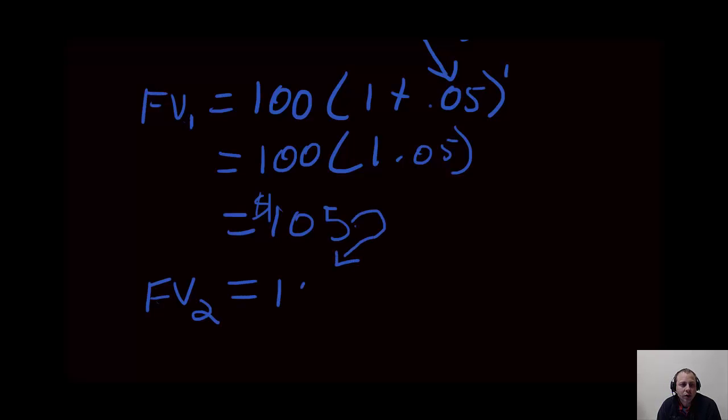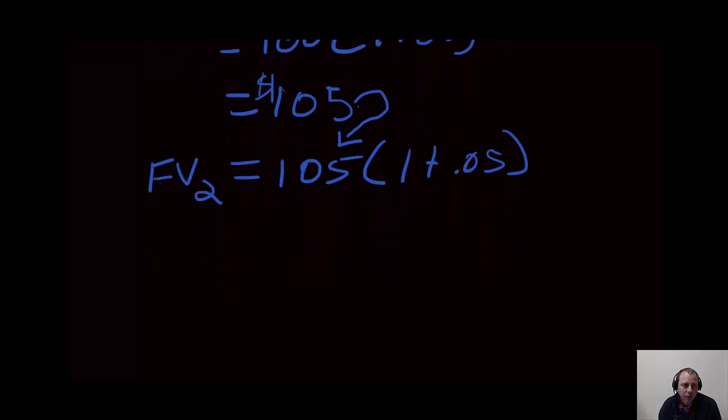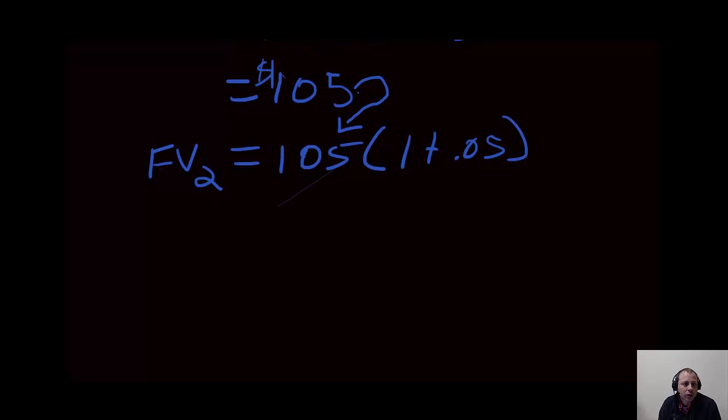$105 times 1 plus 0.05, just like we did before. And now we're calculating from the end of year 1, or the beginning of year 2, to the end of year 2. And we're going to do it again. We just multiply this out as 105 times 1.05, and we are going to get a calculation of $110.25.